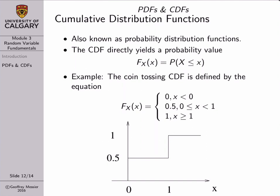A second tool we have in addition to PDFs are CDFs, or cumulative distribution functions — also known as probability distribution functions, but we'll call them CDFs in this class. A CDF actually directly yields a probability value, so there's no need to integrate it. The value of a CDF for a particular random variable is written with the same notation as a PDF except using a capital F. The value of the CDF is directly equal to the probability that the random variable X is less than or equal to the argument we give to the CDF. Because this is a probability value, the y-axis of a CDF is always between zero and one, and the CDF is a non-decreasing function — it always either has to be constant or get bigger.